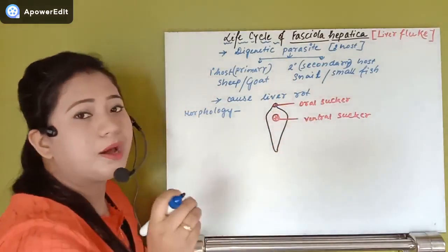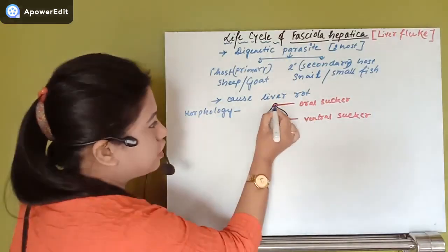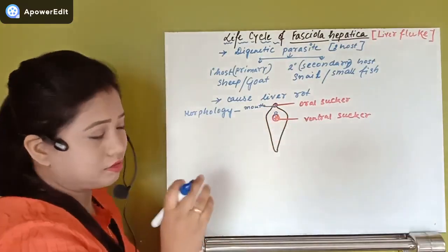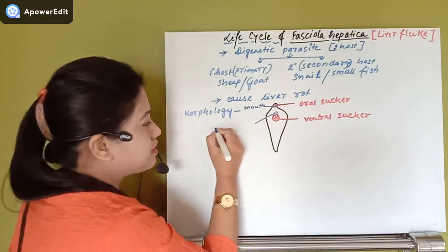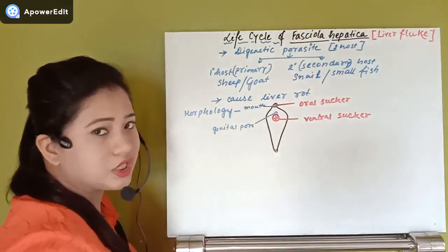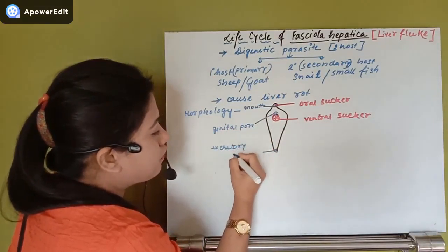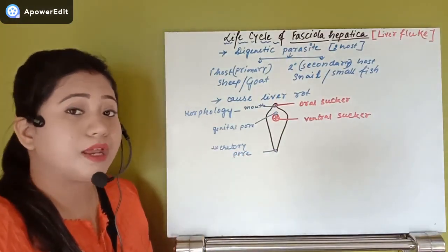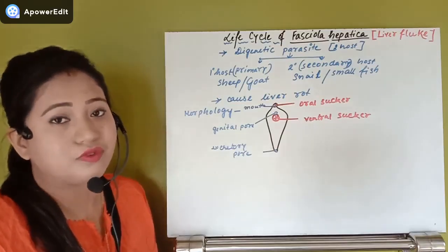Just above the ventral sucker there is another aperture called the genital pore. Toward the posterior-most region, the organism has an excretory pore. You may recall from Platyhelminthes that they have a specific type of cell — the flame cell — which resembles a flickering flame.